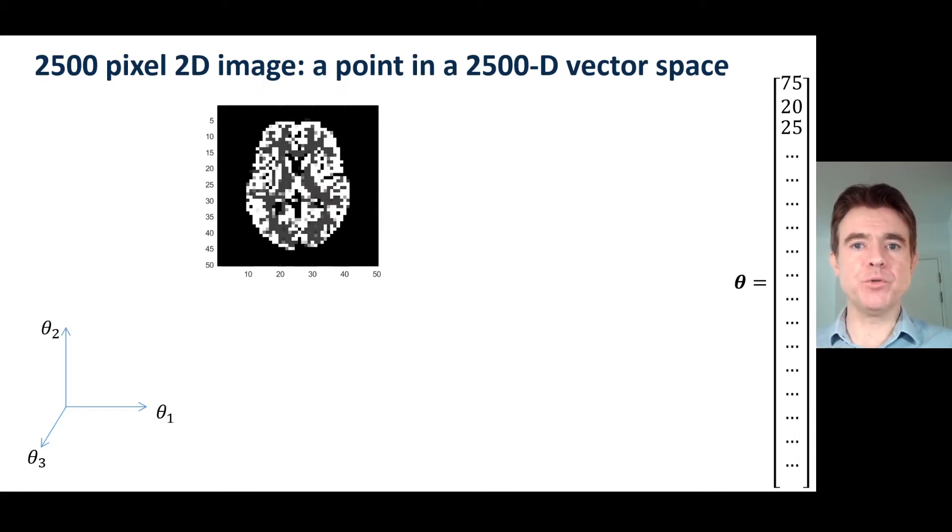Okay, so let's build up complexity further. Let's go back to that 50 by 50 case. So we've got 50 pixels by 50 pixels. This is now a 2,500 pixel image. And again, we can list those values in this tall column vector theta.